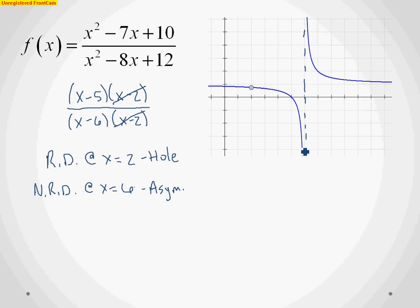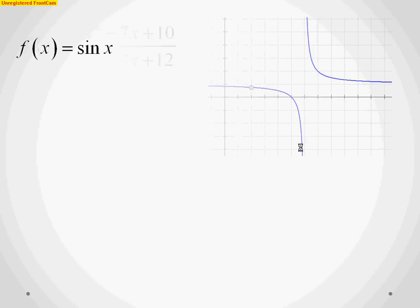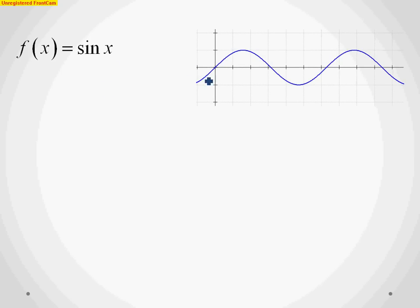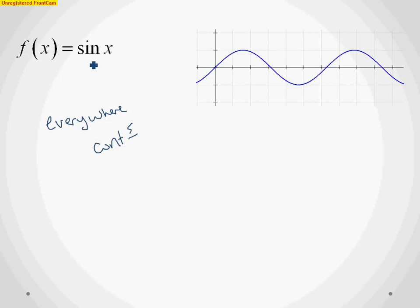Our last example is a bit of a trick question from trig: the graph of sine x. Looking at the graph of sine x, we have a nice smooth curve — no breaks, no jumps, no asymptotes. We can say it is everywhere continuous with no discontinuities. The sine wave is a nice smooth curve that just keeps going. So there you have it — those are your two types of discontinuities: removable and non-removable.